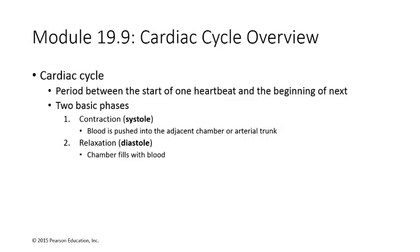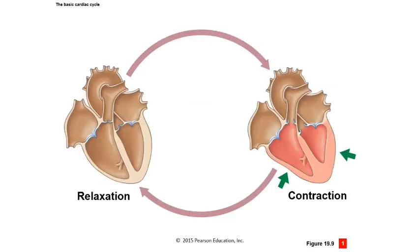The cardiac cycle is the period from the beginning of one heartbeat until the beginning of the next. There are two basic phases: the contraction phase, called systole, during which the heart squeezes and blood is pumped out; and the relaxation phase, diastole, during which chambers rest and fill with blood. The heart goes through alternating cycles of contraction and relaxation.